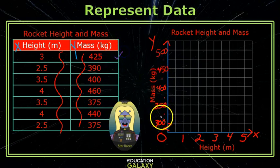The first point, the x value is 3, so I start at 0 and slide to the right to them under 3. The y value is 425, so I slide up to 425.